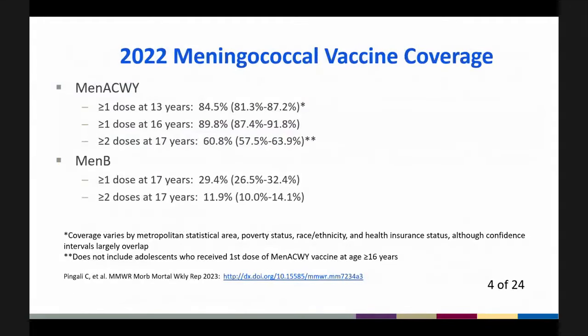The 2022 coverage for at least one dose of MenACWY vaccine was 84.5% for 13-year-olds and 89.8% for 16-year-olds. For 17-year-olds, coverage was 60.8% for at least two doses. As expected, coverage was much lower for MenB vaccine, as those recommendations are based on shared clinical decision-making. Coverage for 17-year-olds for at least one dose was 29.4%, and for at least two doses was 11.9%.